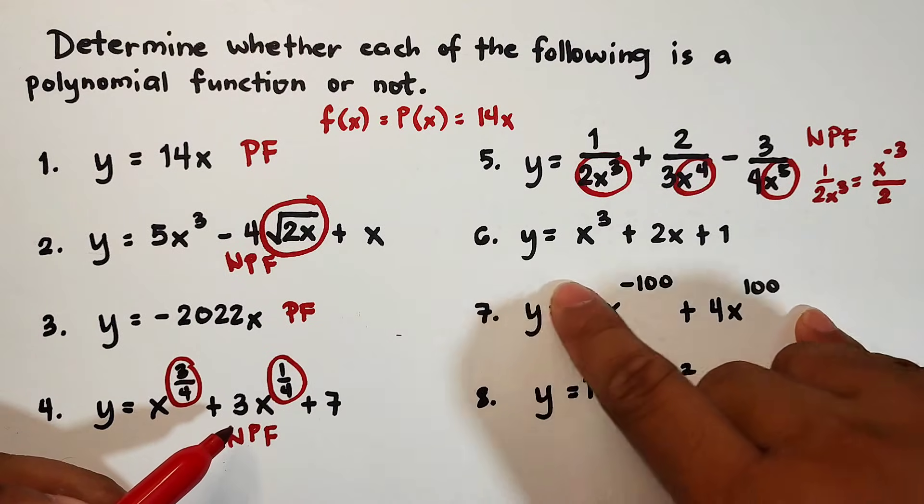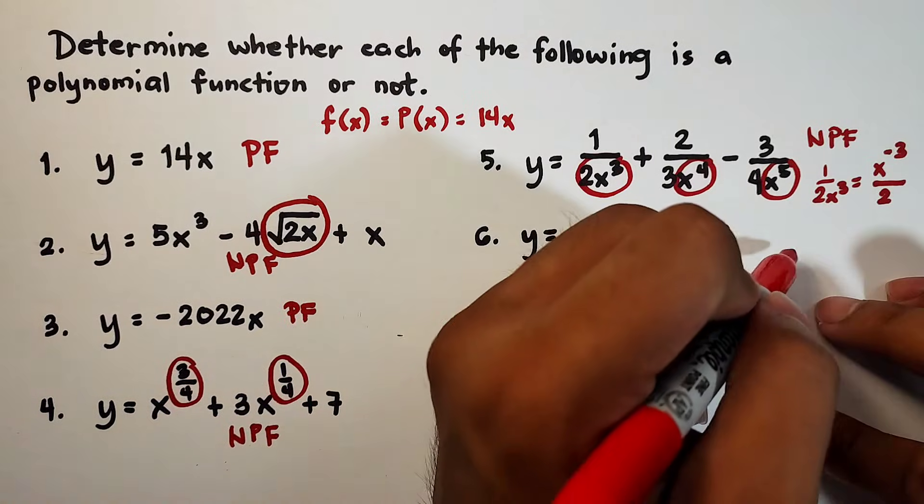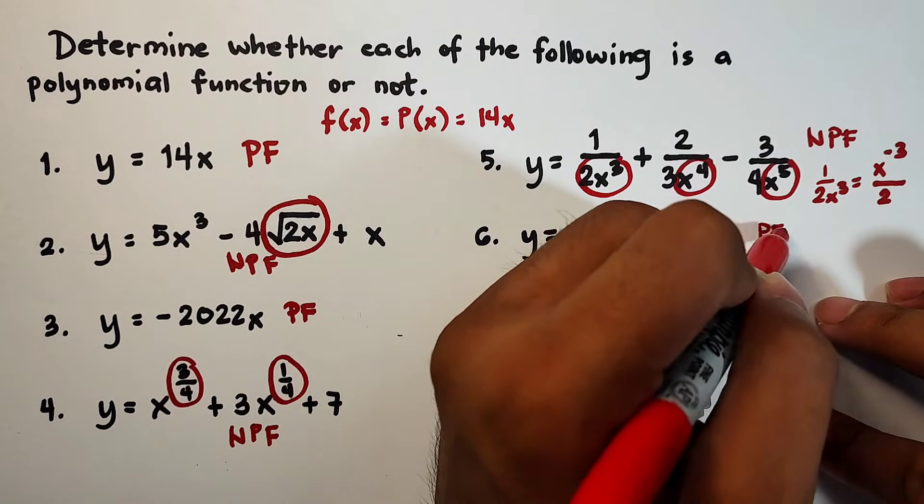Let's go with number 6. y is equal to x cubed plus 2x plus 1. Definitely a polynomial function.